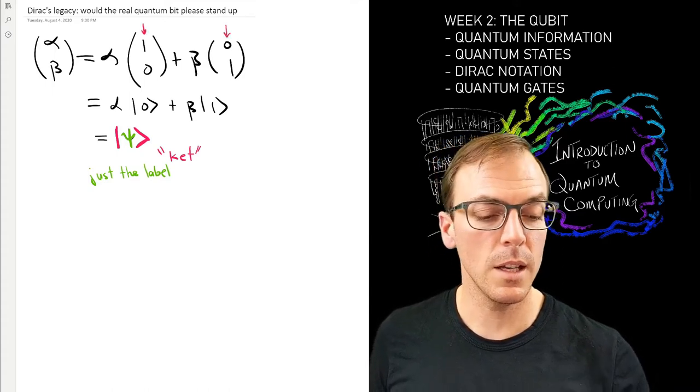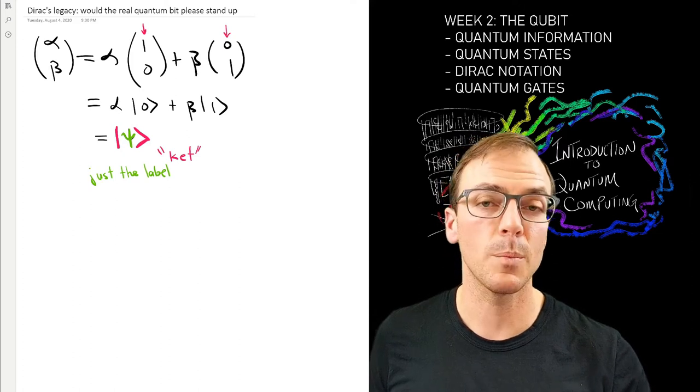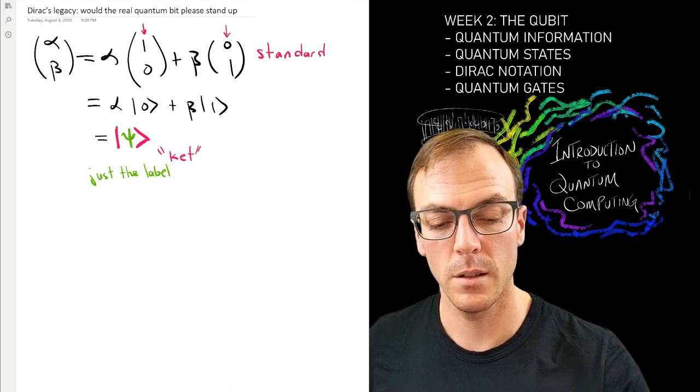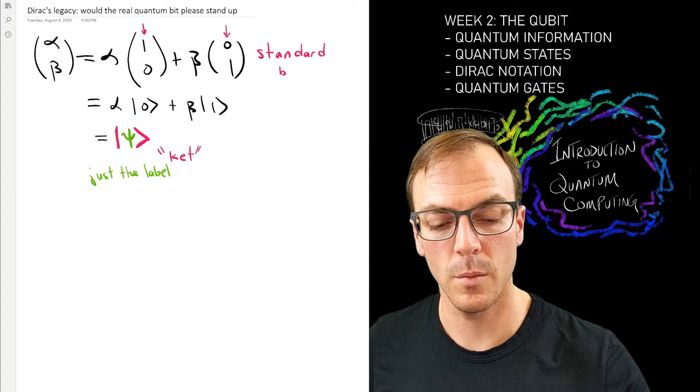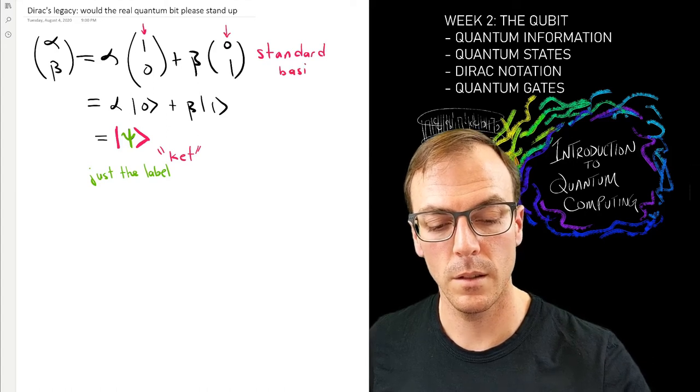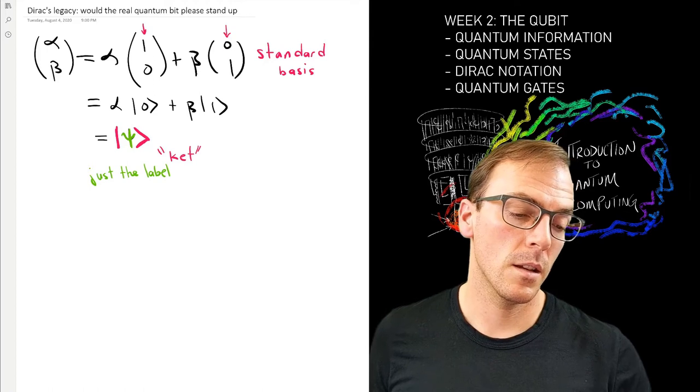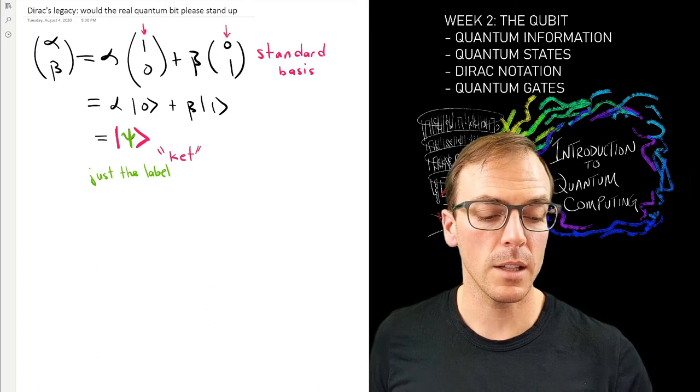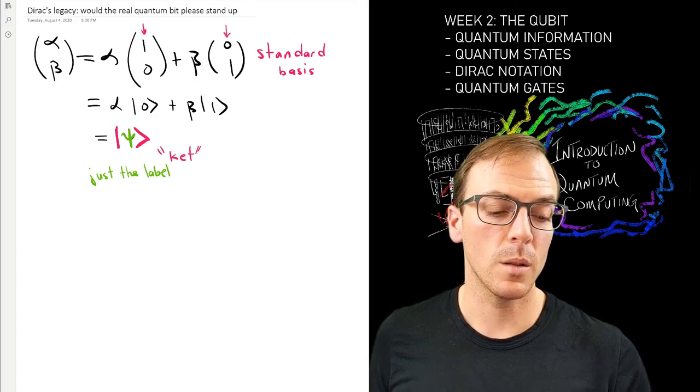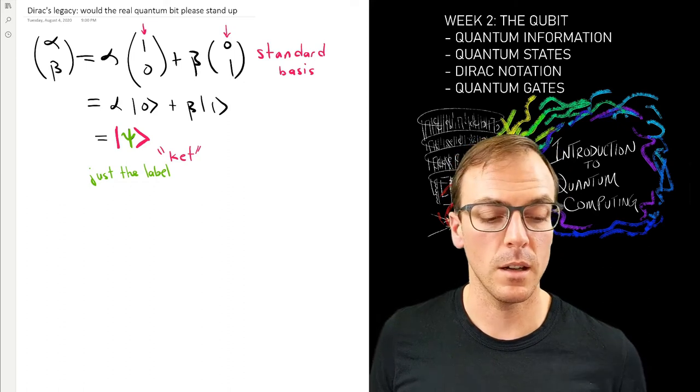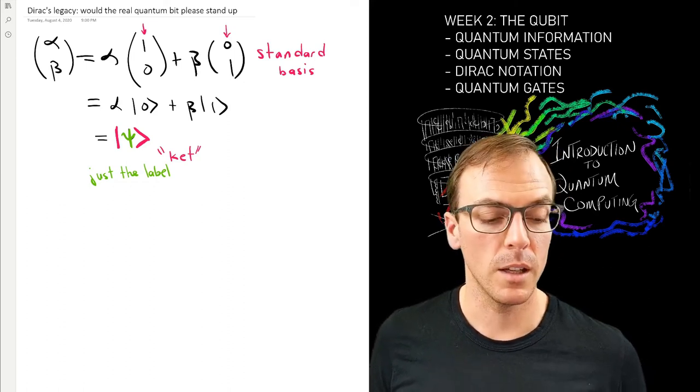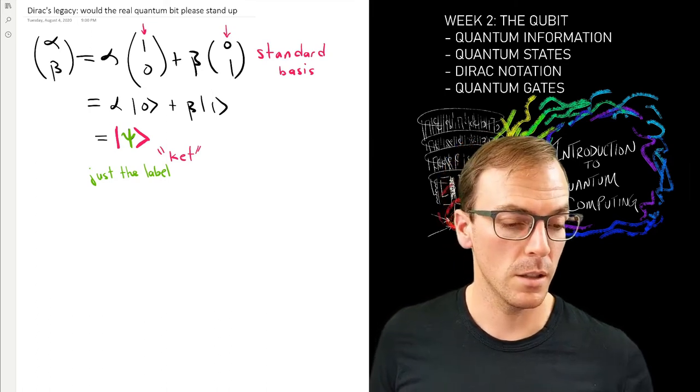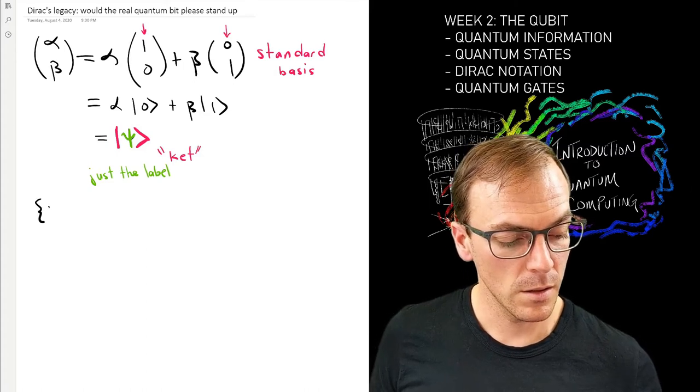In linear algebra, this particular choice of basis is special and it's called the standard basis. We've chosen this basis to be the one where inside of these kets we've given the symbols 0 and 1.